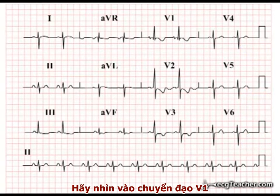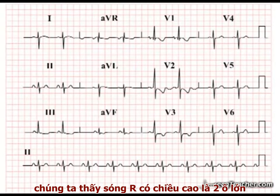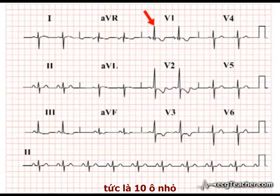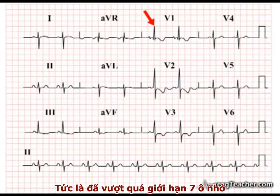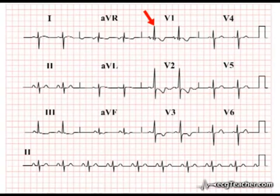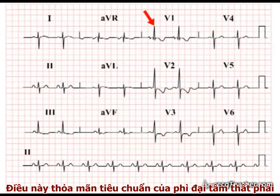When we examine lead V1, we find that the R wave is two large squares in amplitude, or ten small squares, well above our limit of seven small squares. This is consistent with underlying RVH.